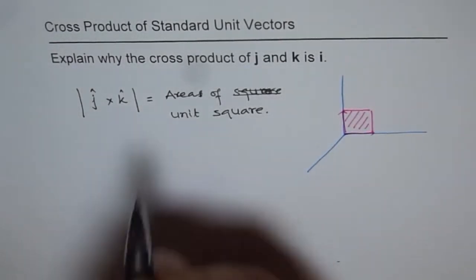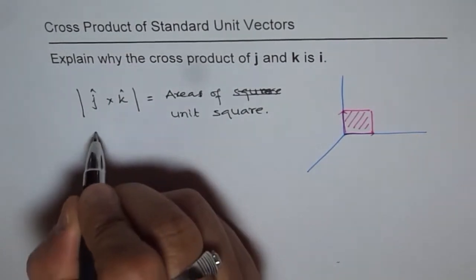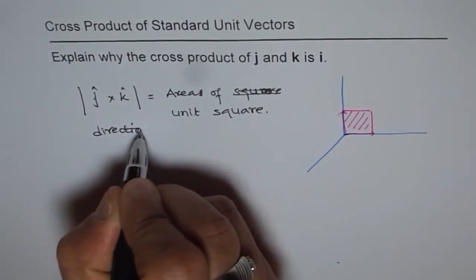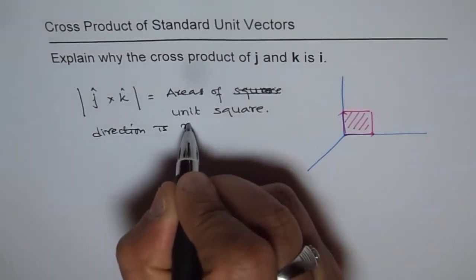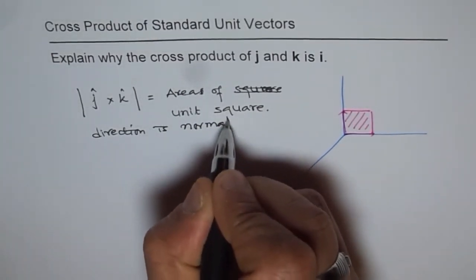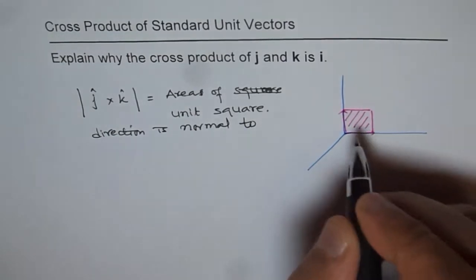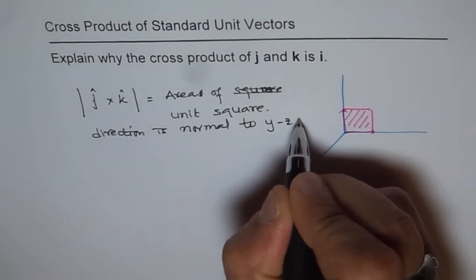So area, this is the magnitude. And the direction is normal to y-z plane, right?